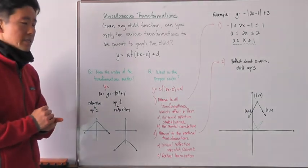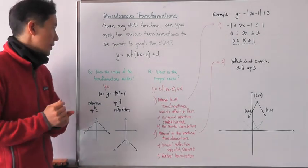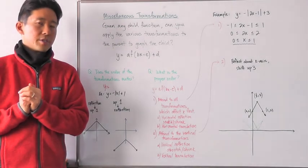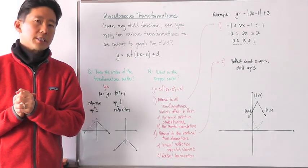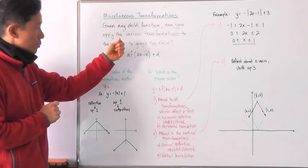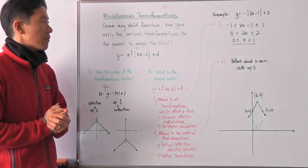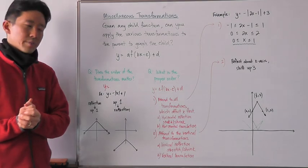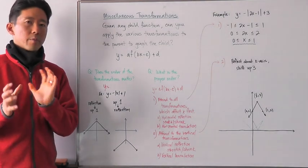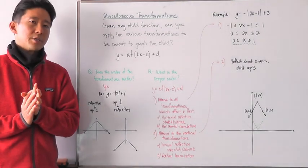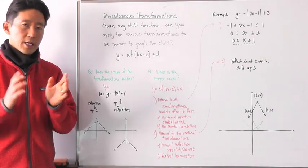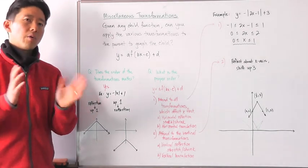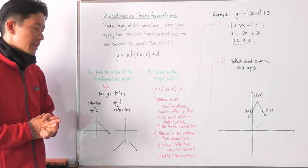Before we actually go ahead and take a look at that question, let's first ask this question, because these two questions are going to be very important for us to consider in order to properly graph the child function. Does the order of the transformations matter? Remember we're taking more than one transformation and applying it to a parent function. Now that we have more than one, does the order matter? And the answer is yes.